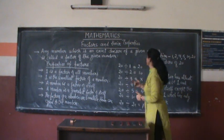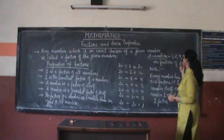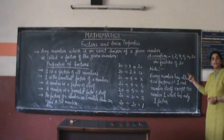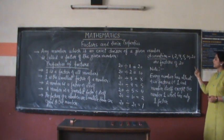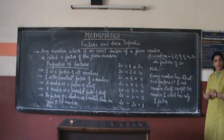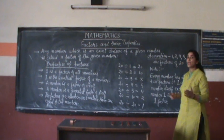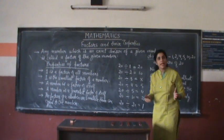So we observe, students, that 1, 2, 4, 5, 10, and 20 are the factors of 20 because these all divide 20 exactly.